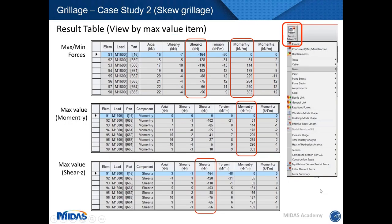For results in grillage models, member forces can be viewed in tabular format. The first table from Midas gives the greatest values. For corresponding forces at a max value item, you can go to 'max value item' and obtain different tables — for example, a table sorted by maximum moment shows maximum moments in the moment column and corresponding shear or torsion in other columns. You can have multiple tables sorted by different max value items, such as the last table sorted by maximum shear.